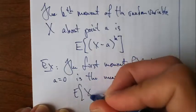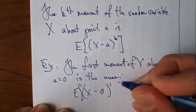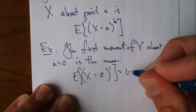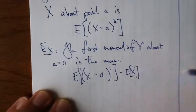That is, if I just put in 0 there, raise it to the first power, take the expected value, that's just the expected value of X.